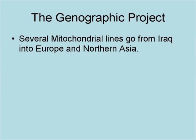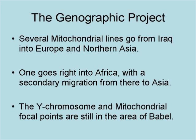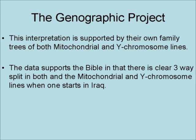Several mitochondrial lines go from Iraq into Europe and Northern Asia. One goes right into Africa, with a secondary migration from there to Asia. The Y-chromosome and mitochondrial focal points are still in the area of Babel. This interpretation is supported by their own family trees of both mitochondrial and Y-chromosome lines. Babel supports the Bible in that there is a clear three-way split in both the mitochondrial and Y-chromosome lines when one starts in Iraq.